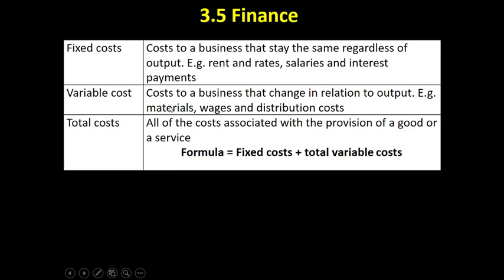Variable costs, on the other hand, are costs of a business that change in relation to output. Examples of these would be materials, wages, and distribution costs. If I make zero loaves of bread, I spend zero on flour. But if each loaf costs 50p in materials and I make a million loaves, I end up spending half a million pounds in variable costs on materials. Variable costs change in direct proportion to output — though you can get things like bulk buying — but the more output that's made, the higher the variable costs will be.